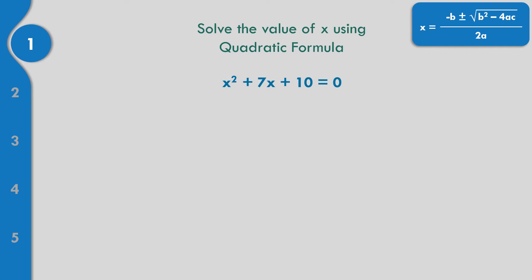Let us solve the value of X using the quadratic formula. The given is written in standard form, so right now we can identify the value of A, B, and C. The numerical coefficient of X squared is 1. The numerical coefficient of X is 7, so B equals 7.